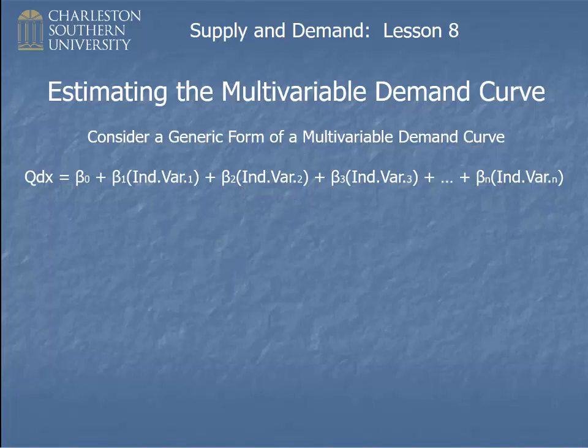In the language of statistics, this thing, beta zero, is sometimes called the intercept and sometimes called the constant. Then beta one is just the coefficient on the first independent variable, beta two is the coefficient on the second independent variable, and so forth.